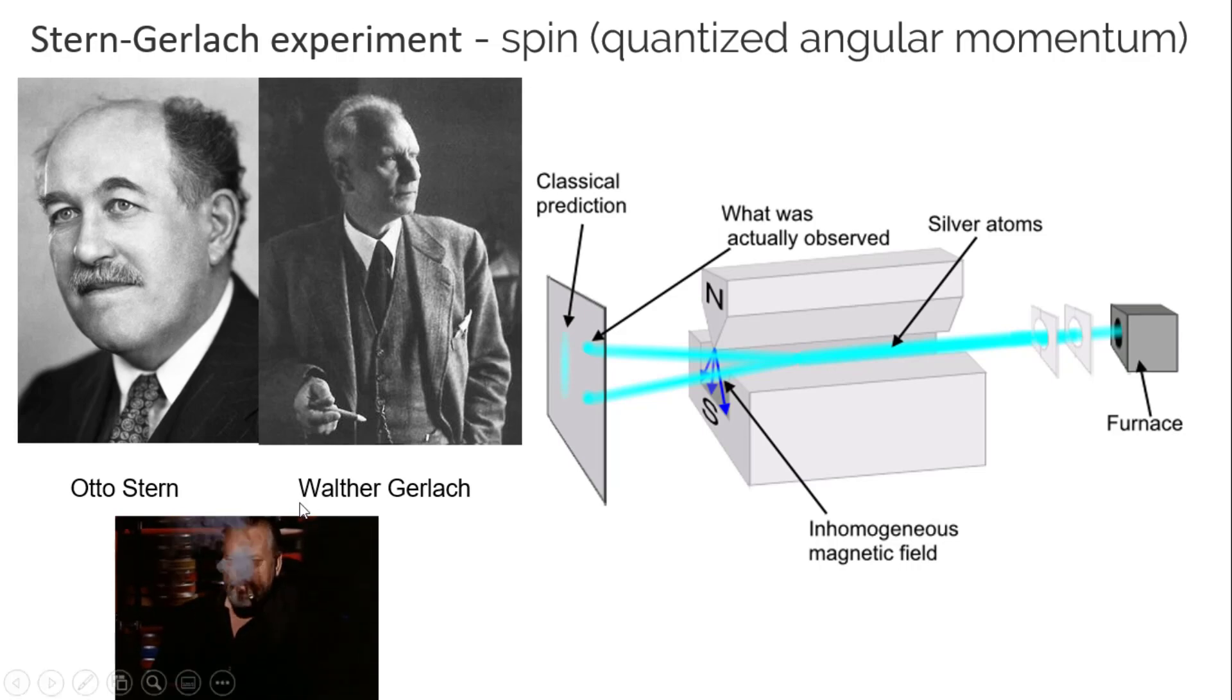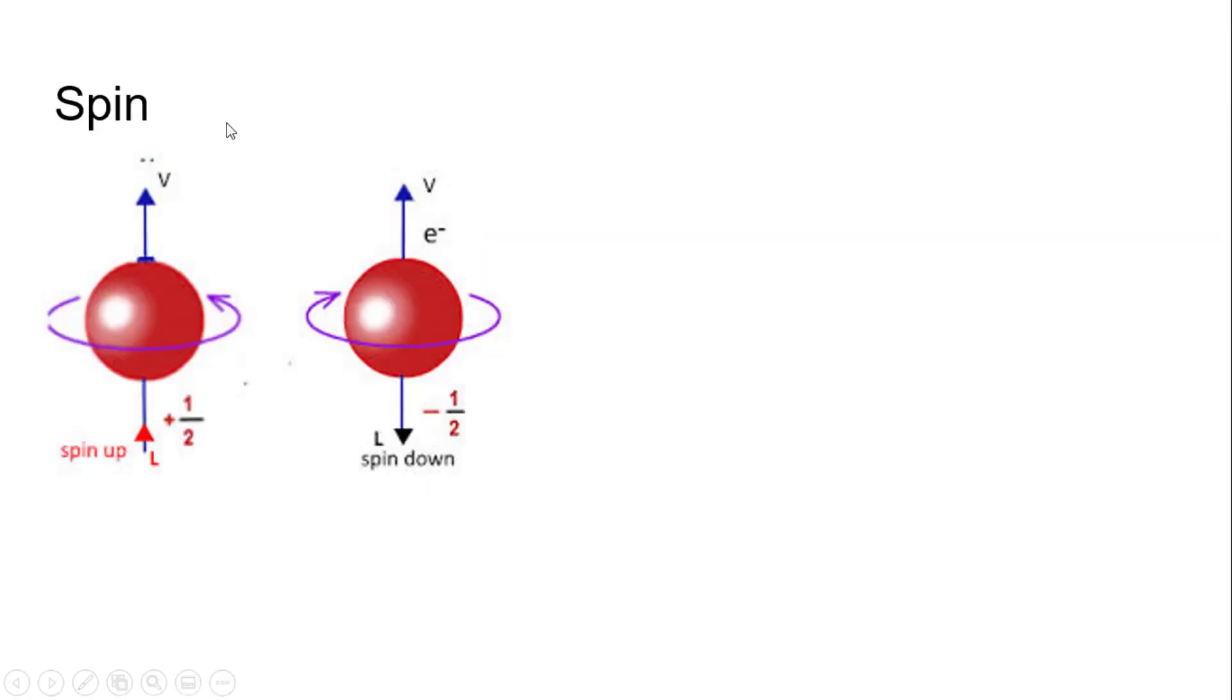And this is an early clue when they talk about the Stern-Gerlach experiment. What they discovered is something called spin. The only way that you could get the pattern they saw, where they only went in one of two areas, is if the electrons are actually spinning. And they can only spin in two different directions. That's how they got the two spaces.